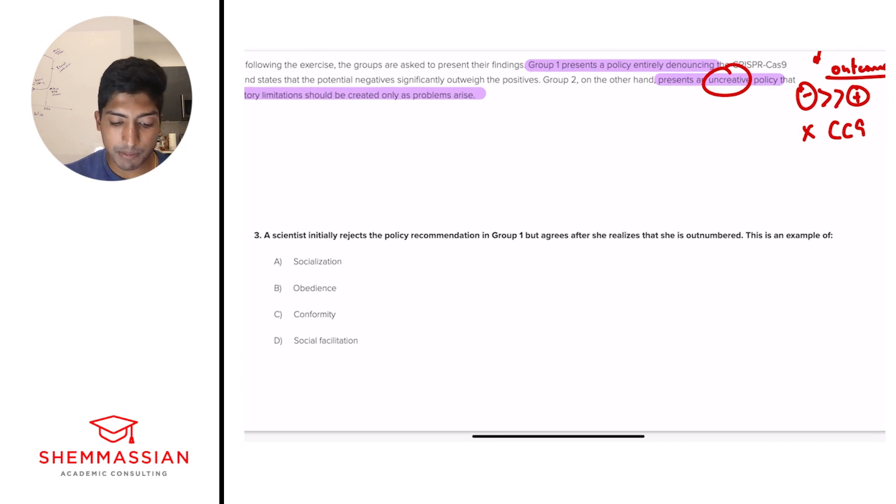Finally, we're on to question number three. A scientist initially rejects the policy recommendation in group one, but agrees after she realizes that she is outnumbered. This is an example of A, socialization, B, obedience, C, conformity, D, social facilitation. Four new terms. We need to know every single one of these terms and what they mean.